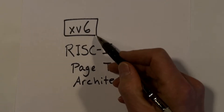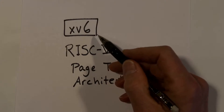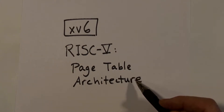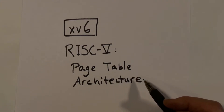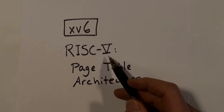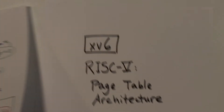This video is part of a series on the XV-6 operating system kernel. In this video, I'm going to talk about address translation and describe the page table architecture that's used in the RISC-V processor, at least as far as we need to know to understand the XV-6 kernel.